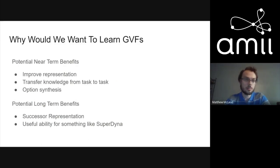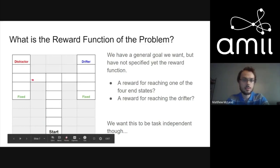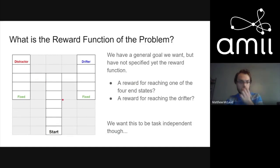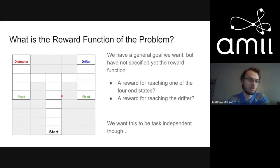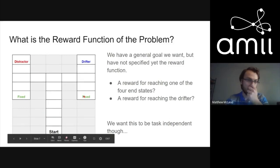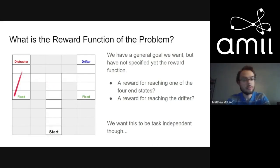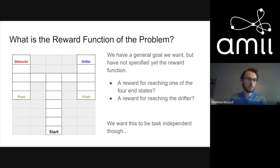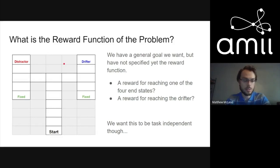Of course, you want to learn GVFs efficiently. Going back to the teammates problem — I set a high-level goal of maintaining accurate value estimates for all four GVFs, but I didn't specify the reward function. Should it be plus-one for reaching each terminating state? Maybe higher reward for visiting the drifter since it's a random walk process and harder to estimate accurately? But all of those are task-dependent reward functions that break if you change the MDP slightly. This is where intrinsic motivation comes in.